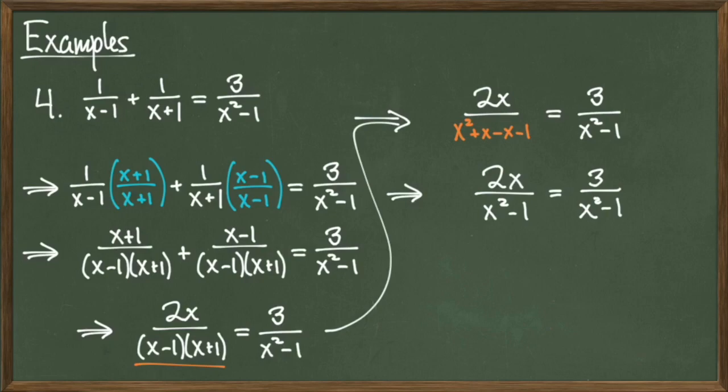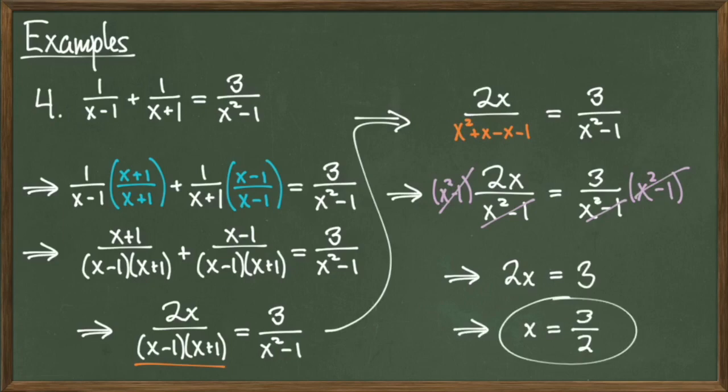This problem ended up working out pretty nicely because the denominators on the left-hand side and the right-hand side match. Therefore, we multiply both sides of the equation by the quantity x squared minus 1. Working through these cancellations, we get a revised equation of 2x equals 3, which will give us a final solution of x equals 3 over 2.